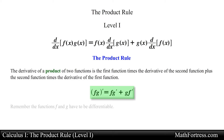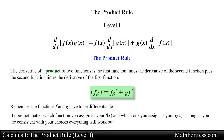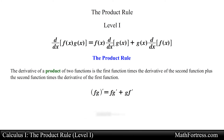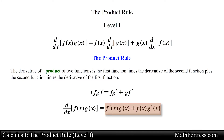Remember the functions f and g have to be differentiable. Also notice that it really does not matter which function you assign as your f of x and which one you assign as your g of x. As long as you are consistent with your choices everything will work out. We can also rewrite the product rule as f prime of x times g of x plus f of x times g prime of x. Some students prefer this version because it generalizes easily to products of three or more functions.